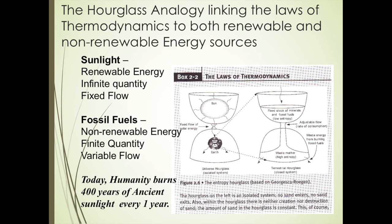I recommend that you read Box 2-2 on pages 30 and 31. The textbook provides a good analogy linking the laws of thermodynamics to both renewable and non-renewable energy sources. While reading Box 2-2, keep in mind that sunlight is a renewable energy with infinite quantity and a fixed flow, while fossil fuels are a non-renewable energy with a finite quantity and variable flow. Today, humanity burns around 400 years of ancient sunlight in the form of fossil fuels every year.